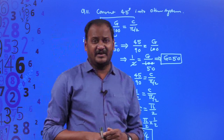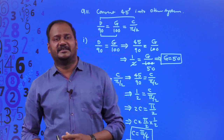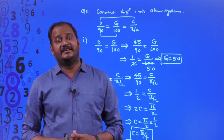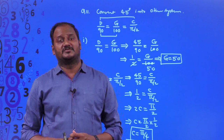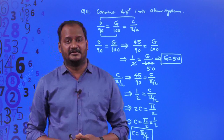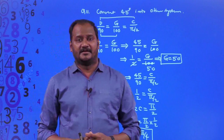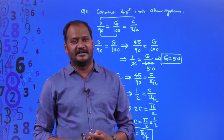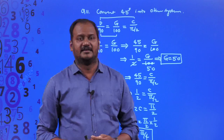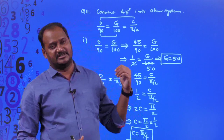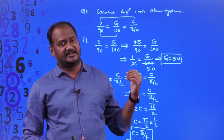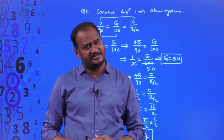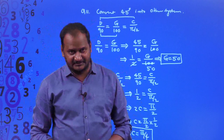Finally, we understand that there are three different systems of units of measurement of an angle: the sexagesimal system, the centesimal system, and the circular or radian measure. The empirical relationship between these three systems is D/90 = G/100 = C/(π/2). Thank you.